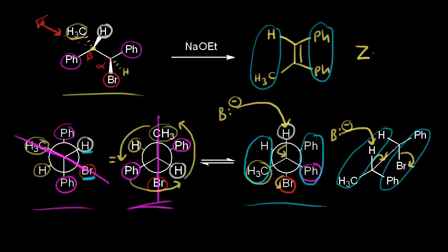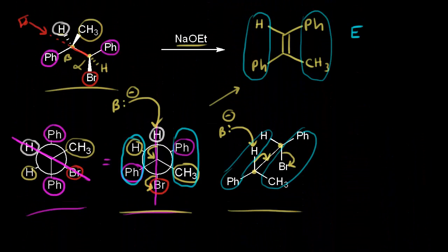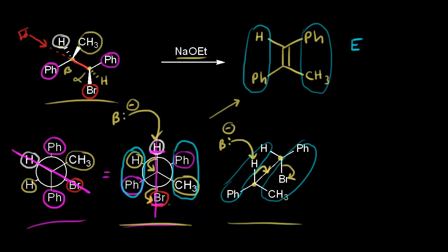This second reaction would be much slower than the first. In the conformation required for the mechanism — with the proton and bromine antiperiplanar — the two bulky phenyl groups are gauche to each other, making it an unstable conformation. In the first reaction, when the proton was antiperiplanar to the bromine, the two phenyl groups were anti to each other, a much more stable conformation. So the first reaction happens considerably faster than the second.